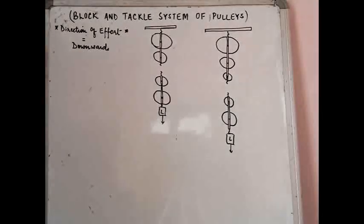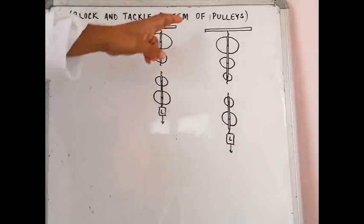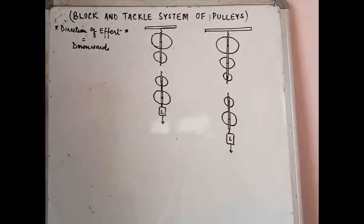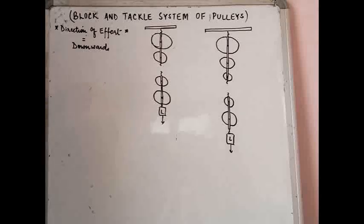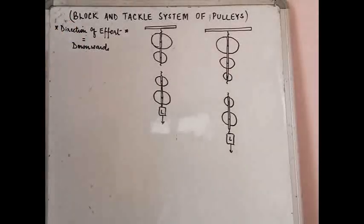Good morning students. Today we are going to deal with a very important topic as far as machines in general and pulleys in particular are concerned. As you can see, the heading says 'Block and Tackle System of Pulleys.' In the previous lecture we discussed a single fixed pulley and a single movable pulley — we studied their MA and VR values, compared them, and found that combining them gives both advantages together. Now we will go into a much more complex design.